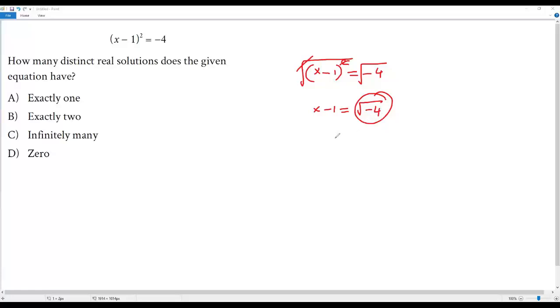So we get an imaginary value on the right side. Even if I add 1 to both sides, let's see what's happening. I'm getting x = √(-4) + 1.